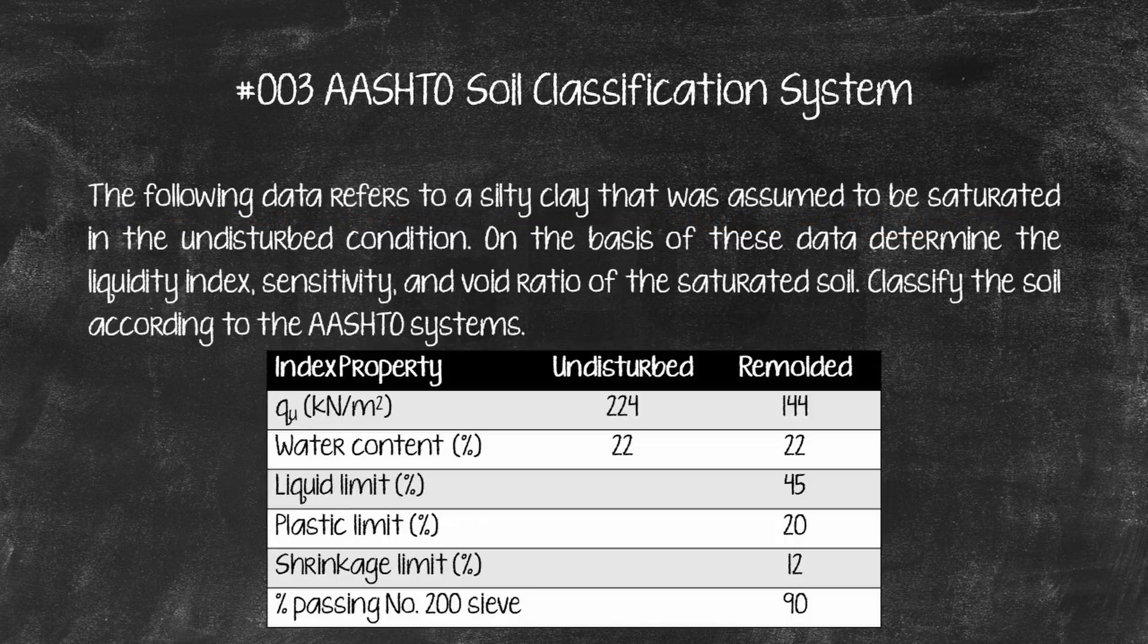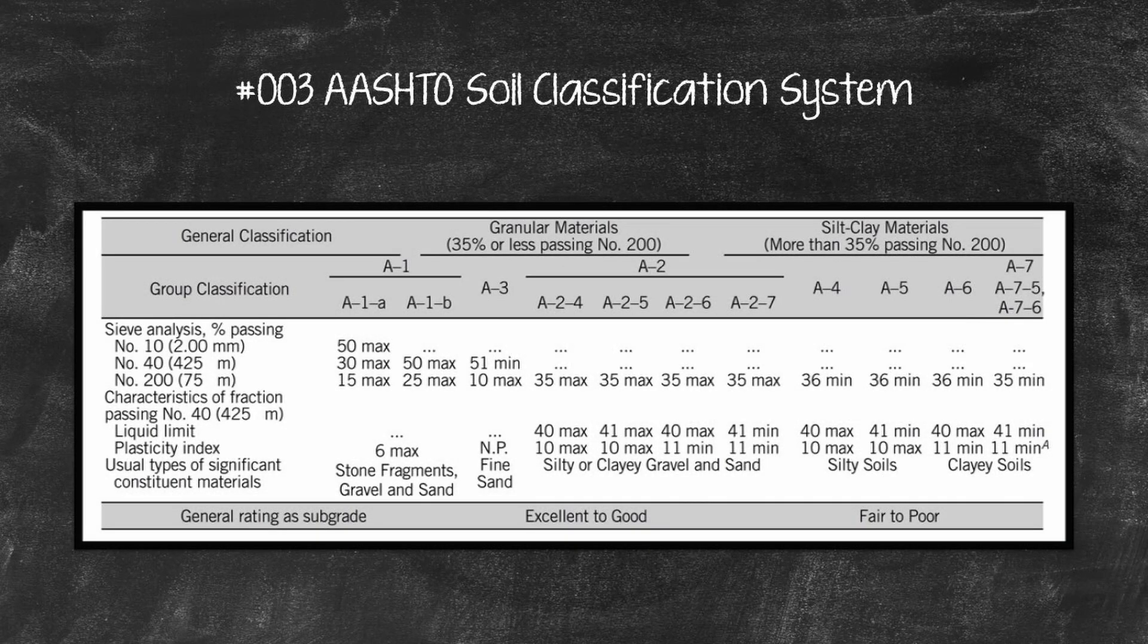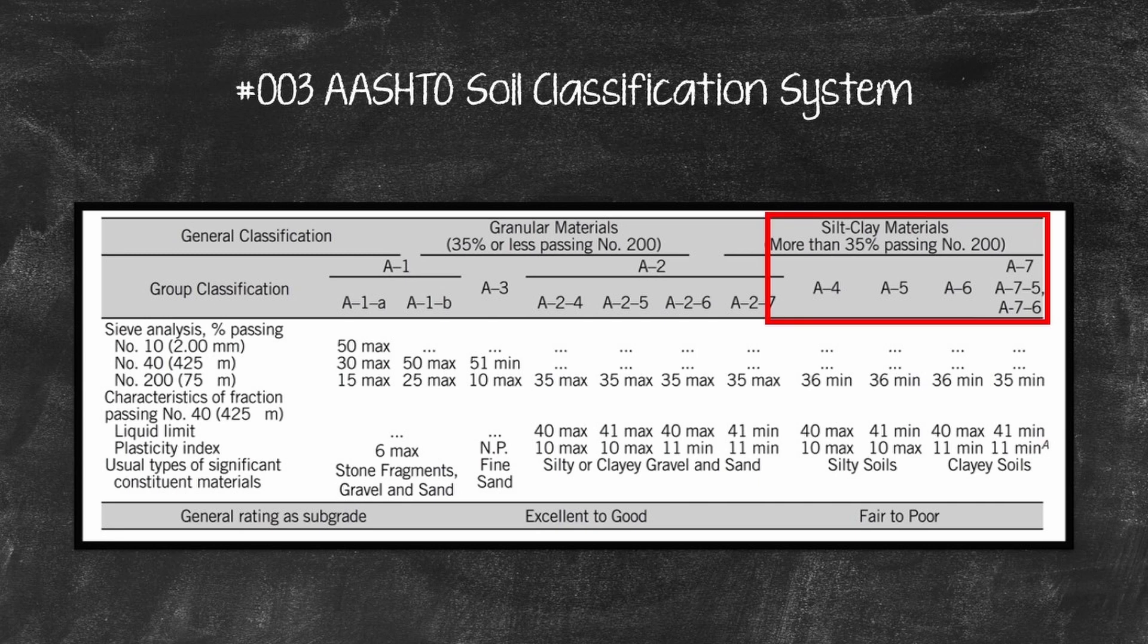Example number 2. The following data refers to a silty clay that was assumed to be saturated in the undisturbed condition. On the basis of these data, classify the soil according to the AASHTO systems. Solution. Passing number 200 sieve equals 90%. Liquid limit equals 45%. Plasticity index equals 25%. With this, the soil is classified as either A75 or A76.